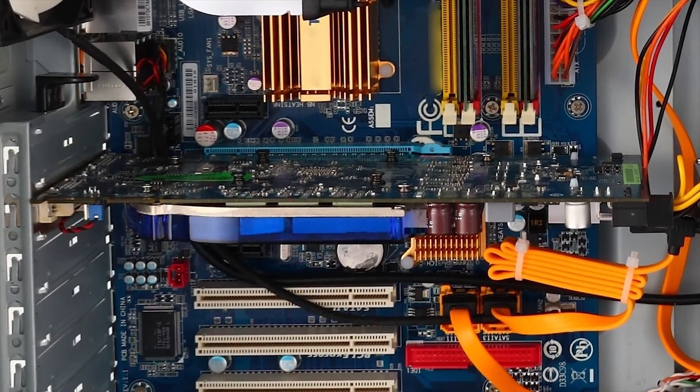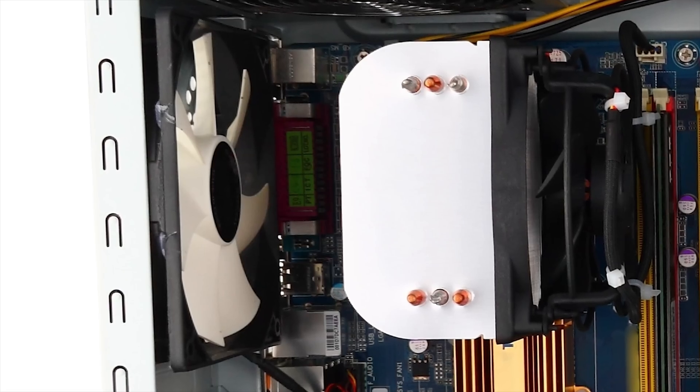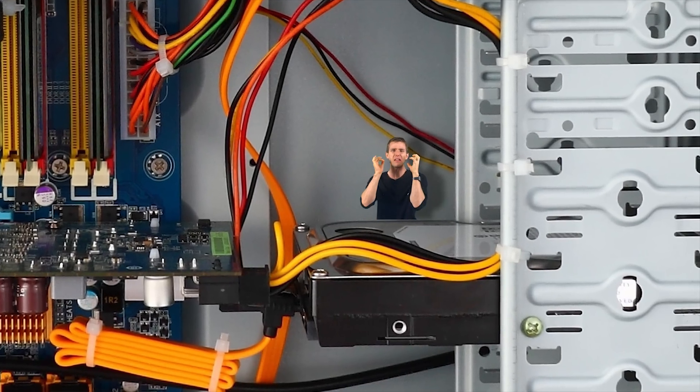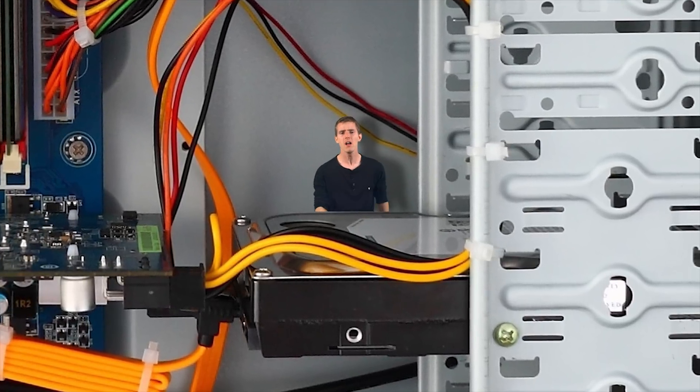One more tip about coil whine is make sure that you've nailed it down to the right component. Often with very high frequency noises, it's difficult to locate exactly where they're coming from. So you might think that the coil whine is being caused by the PCB of your graphics card, but maybe it's actually the fan above it that's whining or the motherboard chipset below it or whatever else. You've got to really get your ears in there and figure out where it's coming from.